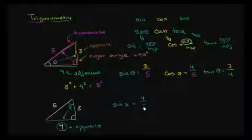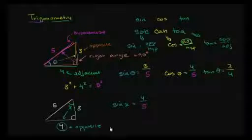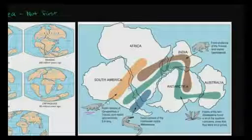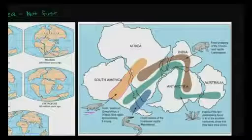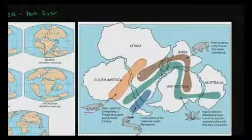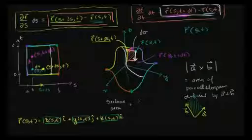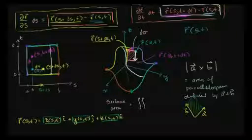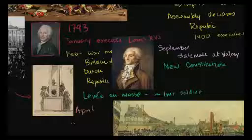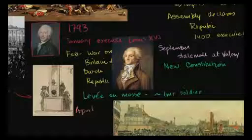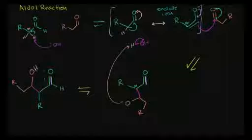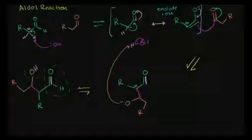So the hypotenuse is now going to be 5. This animal's fossils are only found in this area of South America, a nice clean band here, and this part of Africa. We could integrate over the surface, and the notation usually is a capital sigma. National Assembly. They create the Committee of Public Safety, which sounds like a very nice committee. Notice, this is an aldehyde, and it's an alcohol.